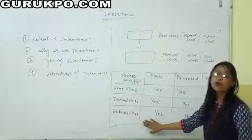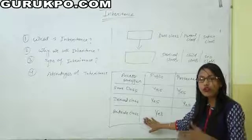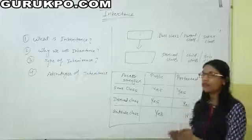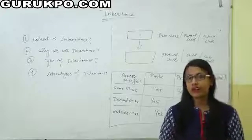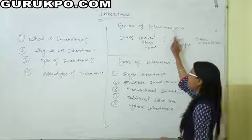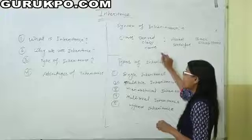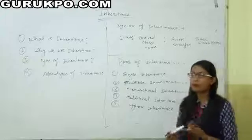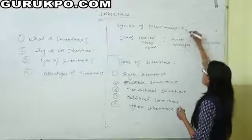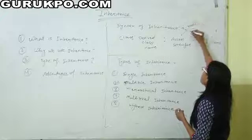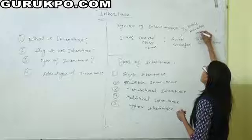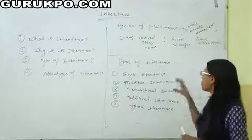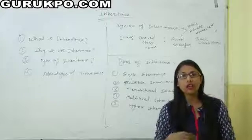If we want to use data members and functions outside the class, we can use only public mode — protected and private are not allowed there. The syntax of inheritance is: first write the keyword 'class', then write the derived class name, followed by a colon operator, then the access specifier (public, private, or protected), and finally the base class name. This is the basic syntax of inheritance using which we can inherit one class into another class.